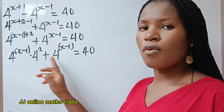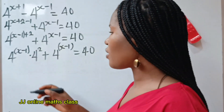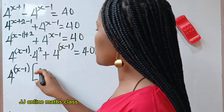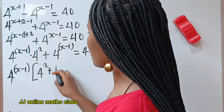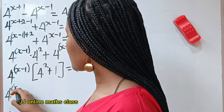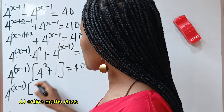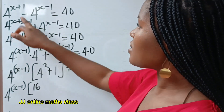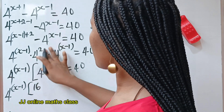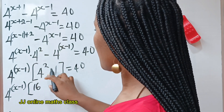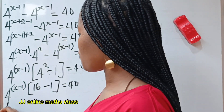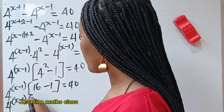You can see that they share the same common factor, so we are going to factorize that out. We write 4^(x minus 1), open brackets: when this is multiplied by this we have 4 squared, plus when multiplied by itself we have 1, is equal to 40. So we have 4^(x minus 1) multiplied by bracket: 4 squared is 16, minus 1, so 16 minus 1 is equal to 40.